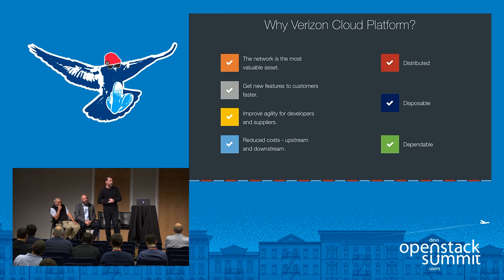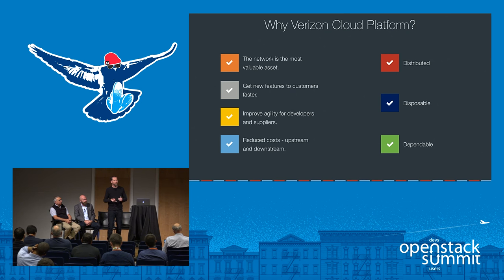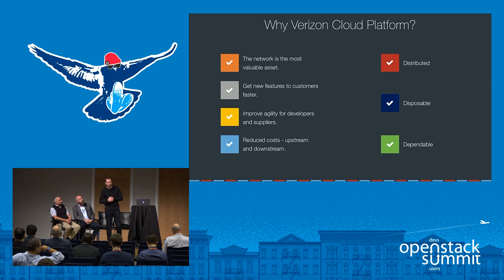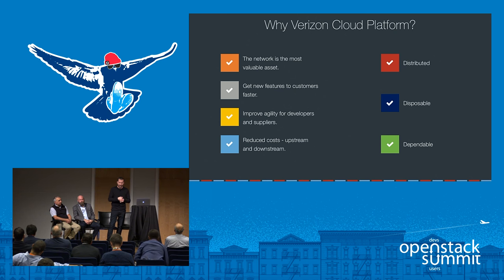Why are we doing this? Our network is our most valuable asset. If we can create products that overlay on top of the network and create a repeatable SLA, we get to leverage what we've invested so much money in. We want to get new features to customers faster, leveraging what DevOps and CI/CD brings to the table for our ecosystem of developers and suppliers. Ultimately this will reduce costs up and downstream, though there's an initial investment required. It should be distributed, disposable, and dependable — the three Ds.